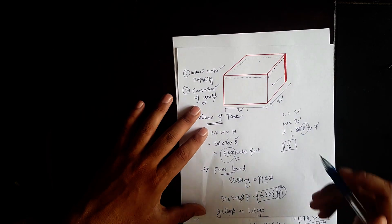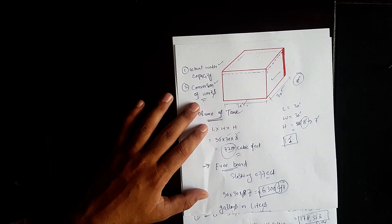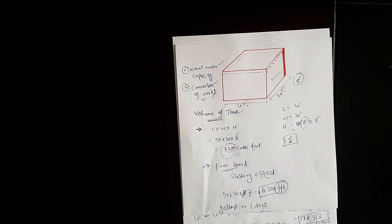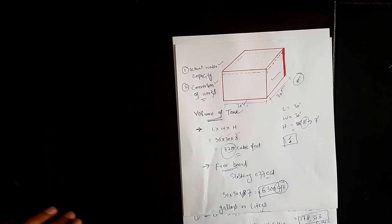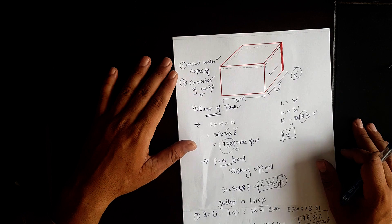If you have a water tank of 30 feet by 30 feet by 8 feet, its actual water capacity will be 178,353 liters and 47,130 US gallons. This was a short video regarding the sloshing effect, actual water capacity, and unit conversion for a water tank. I hope you learned something — please share your views, and see you in another video. Thank you, Allah Hafiz.